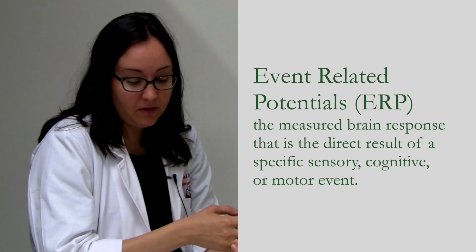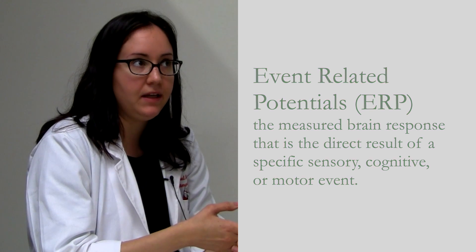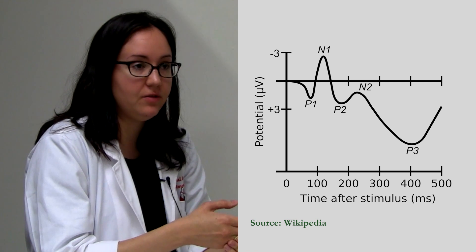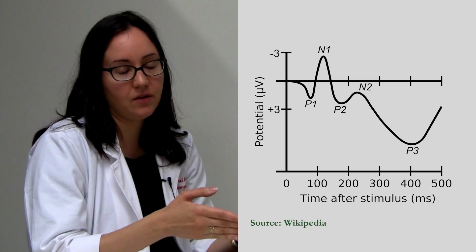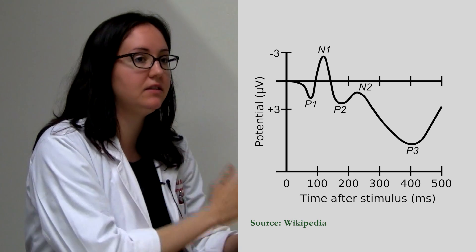They're named after their polarity and latencies. So a name of an ERP would be N2. The N stands for negative, and the 2 stands for 200. So this ERP occurs approximately 200 milliseconds after a stimulus.